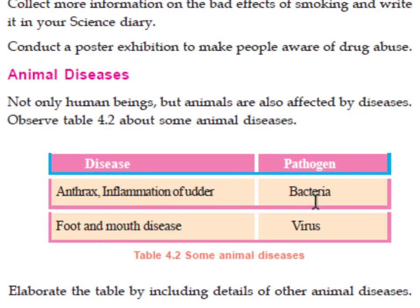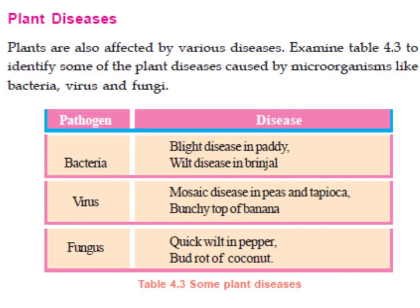Two animal diseases caused by bacteria include foot and mouth disease. Coming to plant diseases, plants are also affected by various diseases. The first pathogen is bacteria. Blight disease in paddy and wilt disease in brinjal are caused by bacteria.